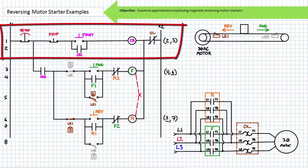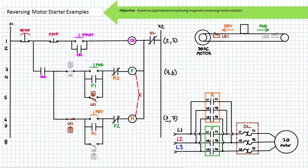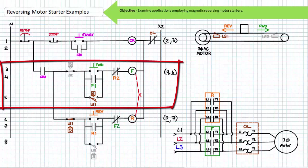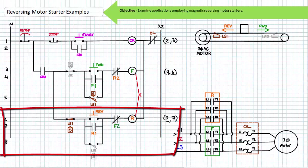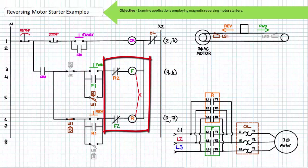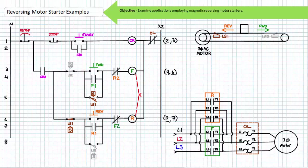Rungs 1 and 2 make use of a control relay that governs the starting and stopping of the whole system. Rungs 3, 4 and 5 govern the forward contactor. Rungs 6, 7 and 8 govern the reverse contactor. Note the mechanically and electrically interlocked forward and reverse contactor coils — these interlocks ensure the forward and reverse contactor are never simultaneously closed. Additionally note the use of two mechanically interlocked limit switches LS1 and LS2, colored and annotated to indicate that when the normally open side of a particular limit switch closes, the normally closed side simultaneously opens.